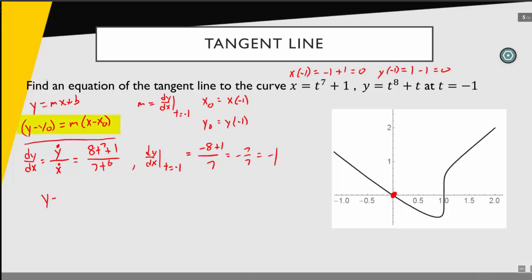Now we're going to have y minus our y value 0 is equal to our slope times x minus our x sub 0 point. It looks like our equation of the tangent line of this parametric equation at t equals negative 1 is y is equal to negative x.